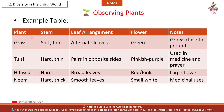Example Table: Plant — Grass; stem: soft, thin; leaf arrangement: alternate leaves; flower: green; grows close to ground. Plant — Tulsi; stem: hard, thin; leaf arrangement: pairs on opposite sides; flower: pinkish purple; used in medicine and prayer.